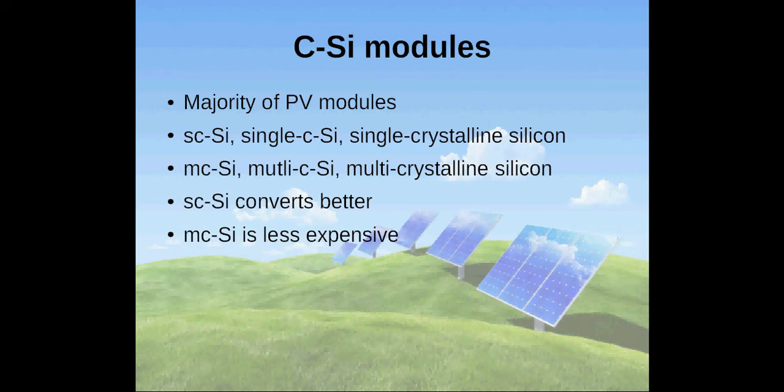Single CSI module and MCSI or multicrystalline silicon module. Commercial SCSI converts electricity better than multicrystalline, while the latter is less expensive than single crystalline silicon modules.